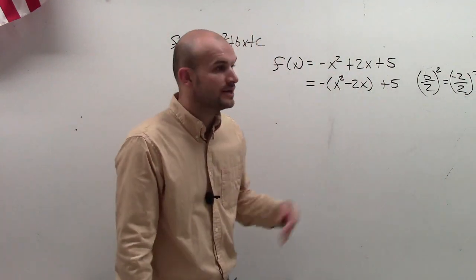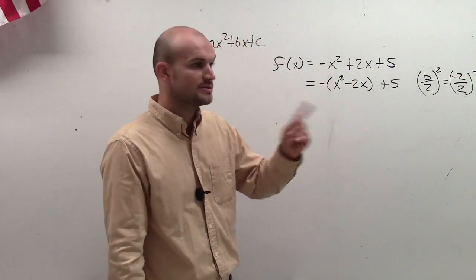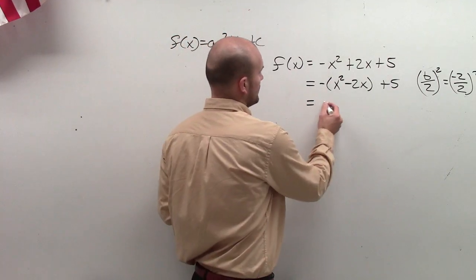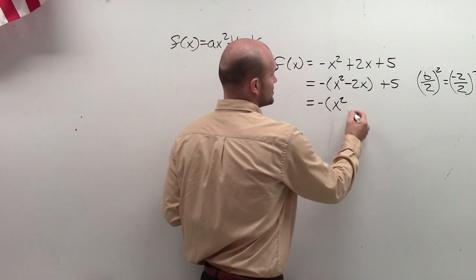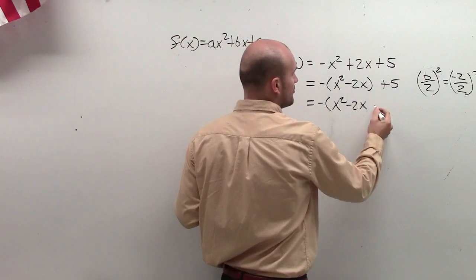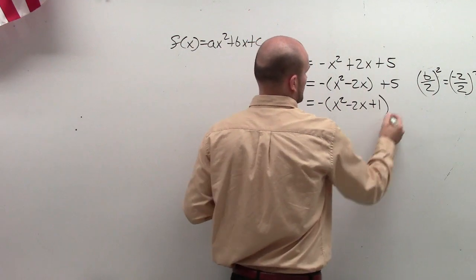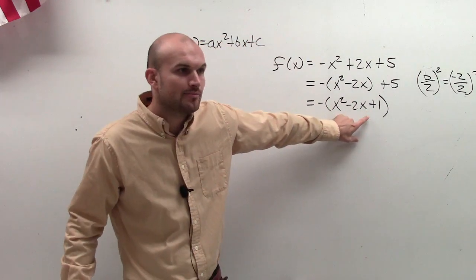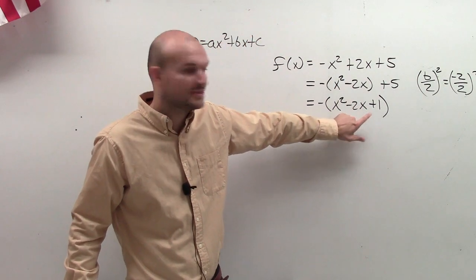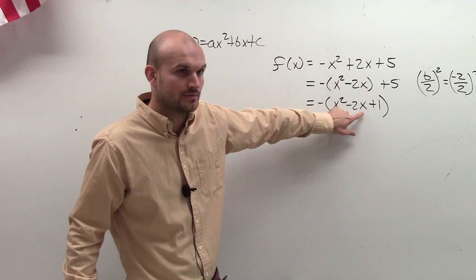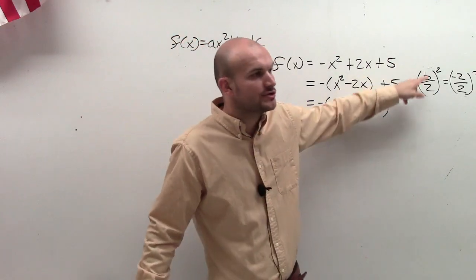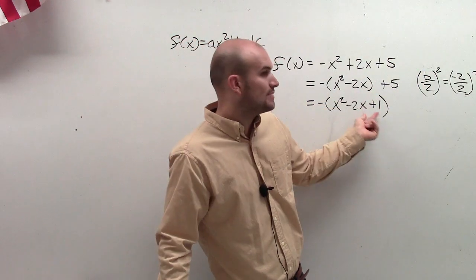So what I do is rewrite it now: x² - 2x + 1. I have now created a perfect square trinomial. That is a perfect square trinomial. That's what the b over 2 squared did to me. It created that perfect square trinomial.